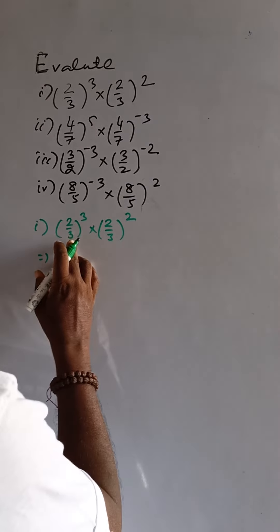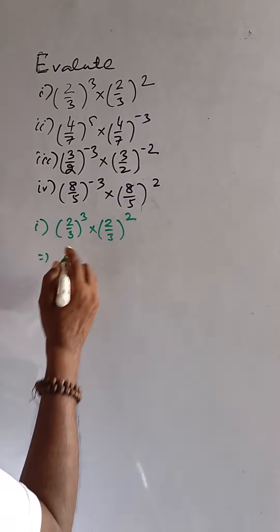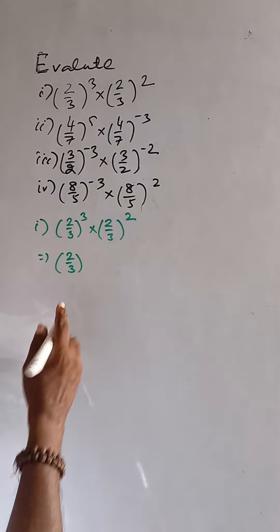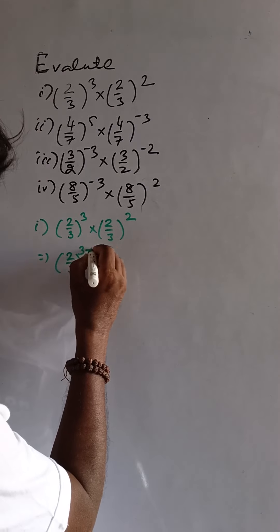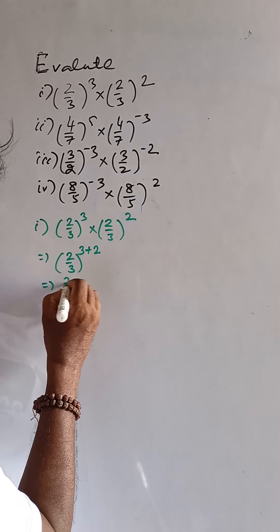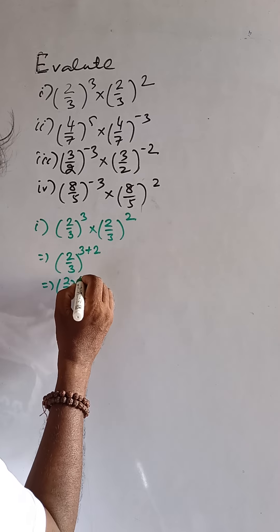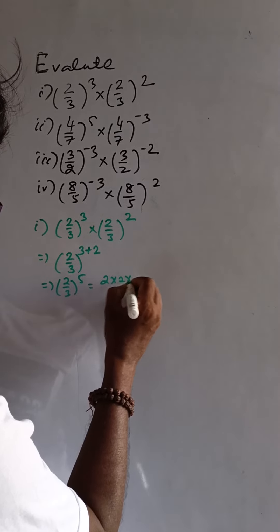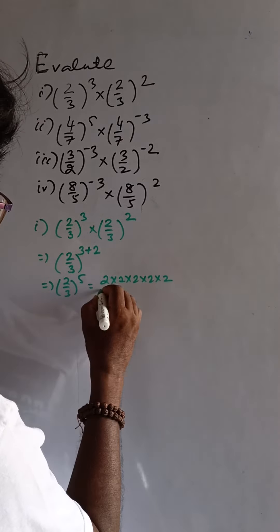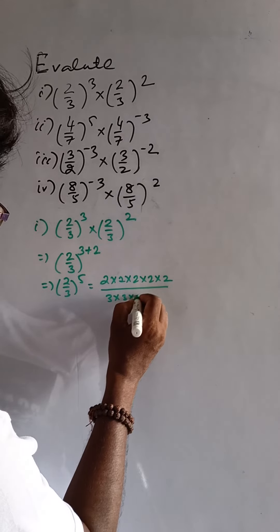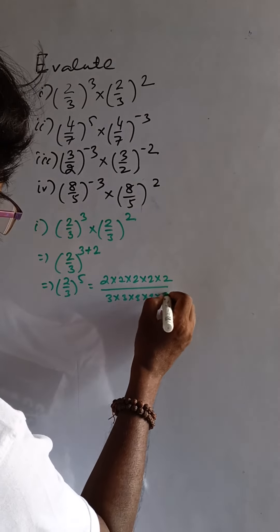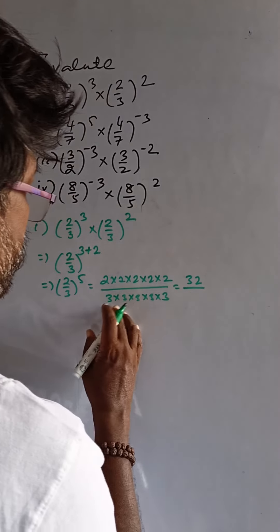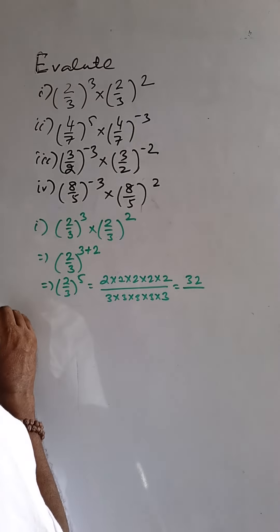Here the bases are equal and both bases are 2 by 3, and the condition is multiplication. In this condition the powers will add, so this is 2 by 3 to the power 5. So 5 times 2 divided by 5 times 3, that is 32 divided by 243.